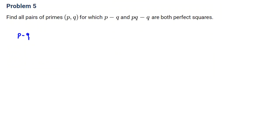Let's write P minus Q equals X squared, and PQ minus Q equals Y squared. We write all things that may be useful. Why? Because at the beginning of the solution, when you want to try a problem, you don't know which results are useful and which are not. So write all of them. For example, you reach eight results; at the end you'll understand five are important and three are useless.